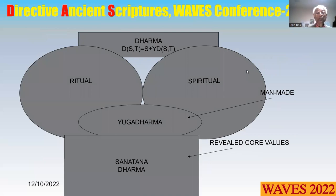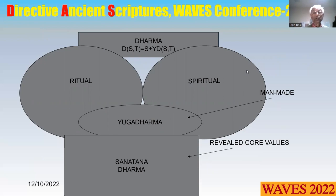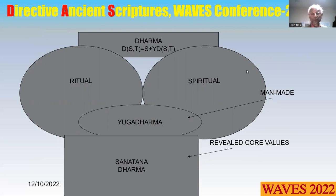Dharma has two components: Sanatana Dharma and Yuga Dharma. Yuga Dharma contains rituals and spiritual practices. Sanatana Dharma is atemporal — that is, it does not change with space and time. It includes revealed core values only.